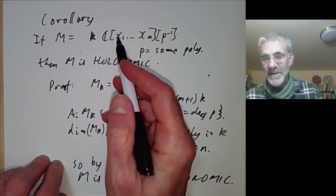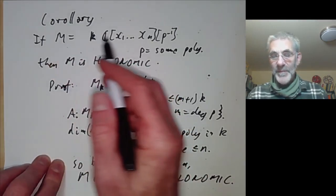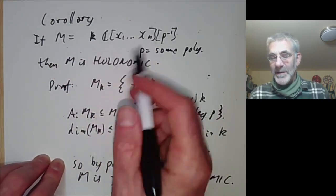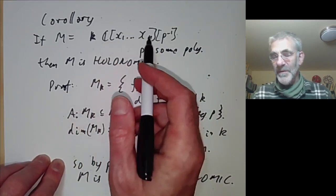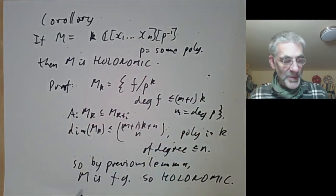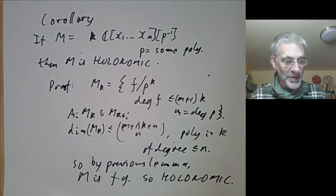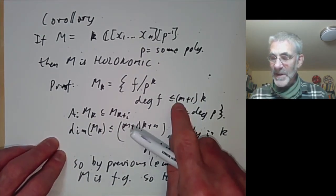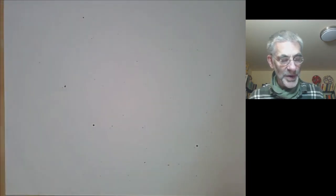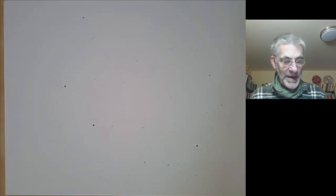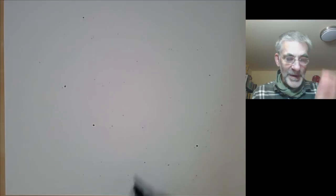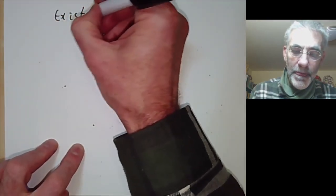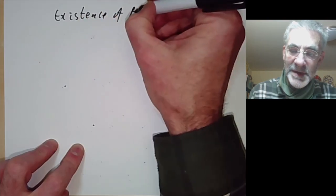All we're saying is that this module doesn't grow faster than a polynomial of degree n, which automatically implies it's holonomic. In fact, we can also see its multiplicity is at most m+1. Now, finally, we can prove the existence of the Bernstein-Sato polynomial.